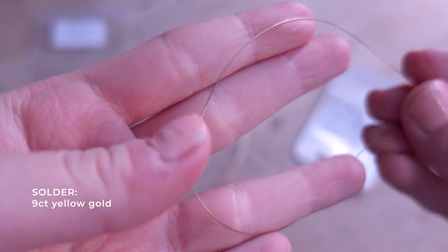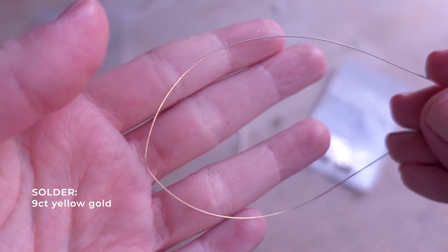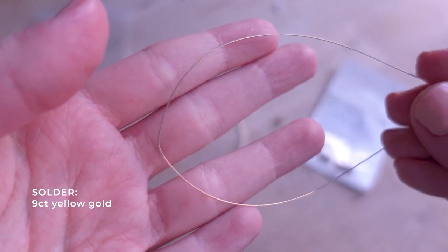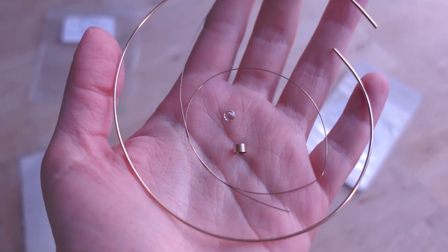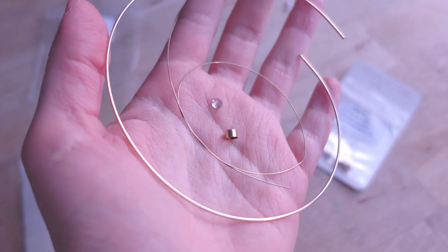For soldering I will use this 9 carat yellow gold solder wire which I found works great. These materials shouldn't be hard to find, check with your local supplier.